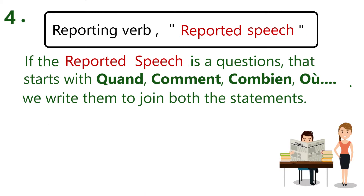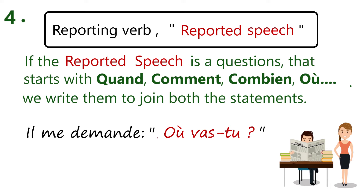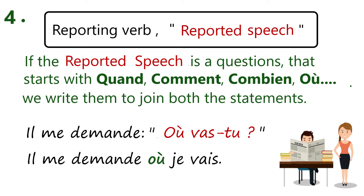Rule number four: if the reported speech is a question that starts with 'quand,' 'comment,' 'combien,' 'où,' or 'pourquoi,' we write them as-is to join both the statements. For example, 'il me demande où vas-tu ?' After changing the sentence to indirect speech it will be: 'il me demande où je vais.' We write 'où,' which was already given in the question, and write the rest of the statement in simple form without any inversion.